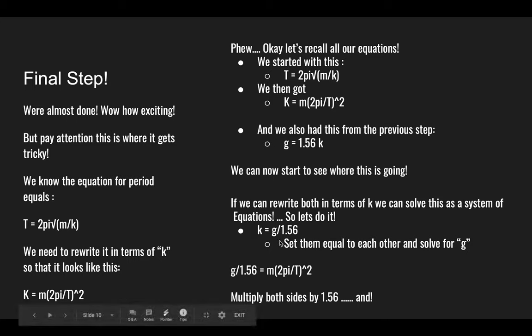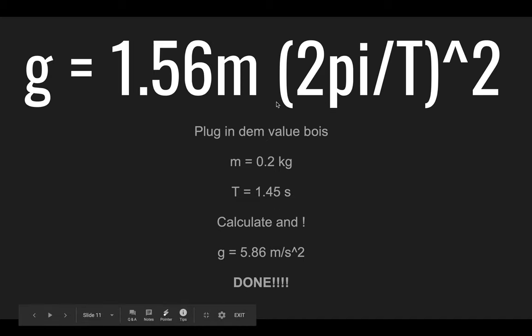If we set them equal to each other, you gotta solve this one for k, so k equals g divided by 1.56. Then you set them equal to each other and then you literally just multiply 1.56 to the other side and then you get this monstrosity right here.